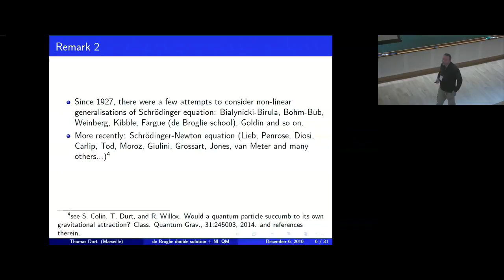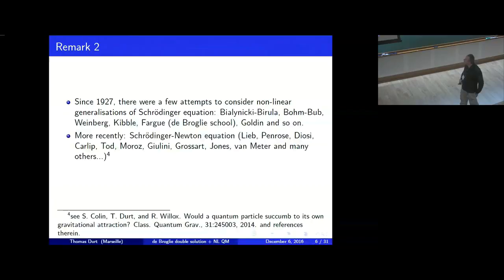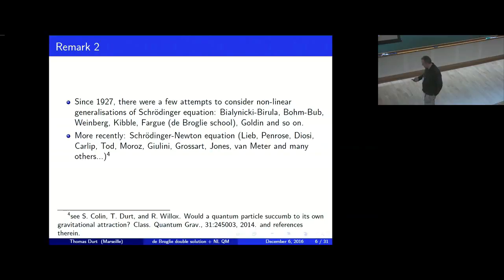Looking at the literature, from time to time there were proposals to generalize the Schrödinger equation and replace it by a nonlinear equation. This was done by Bialynicki-Birula; there was a model from the 1960s by Baumbach describing the measurement process with a nonlinear equation; there were proposals by Weinberg; and several members of the de Broglie school in France also worked on this program. More recently, there was a lot of work around the Schrödinger-Newton equation, and I will focus on this equation as a good candidate to realize the de Broglie double solution program.